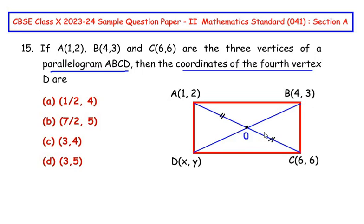Similarly the diagonal BD will be divided into two equal halves by the diagonal AC. So the point O is actually acting as a midpoint of the diagonal AC as well as of the diagonal BD.